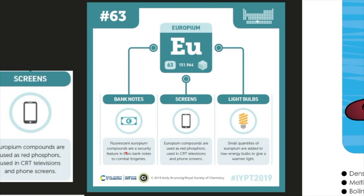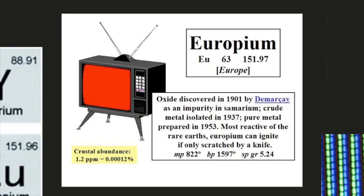As we previously mentioned, banknotes. Fluorescent europium compounds are a security feature in euro banknotes to combat forgeries. Screens. Europium compounds are used as red phosphorus, used in CRT televisions and phone screens. Light bulbs. Small quantities of europium are added to low energy bulbs to give a warmer light, according to Royal Society of Chemistry.